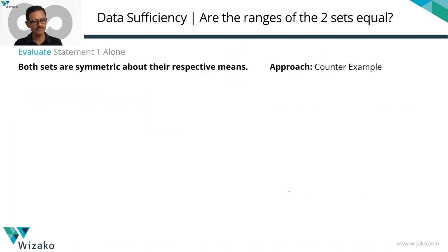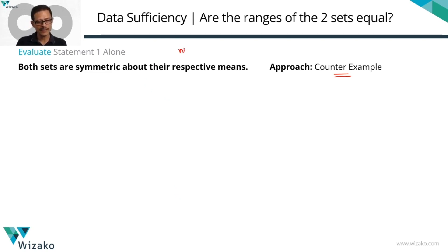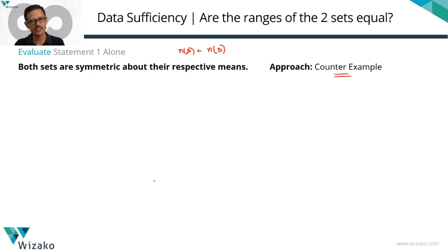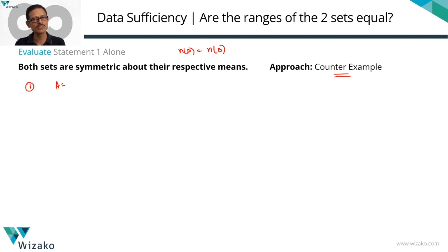Start by evaluating Statement 1. It says that both sets are symmetric about their respective means. The approach is counterexample. We know that n of A equals n of B, so the number of elements in set A equals the number of elements in set B. I'm starting with an example where the ranges of both sets are equal. Let's say A equals 1, 2, 3.